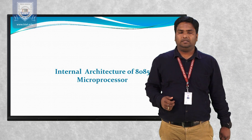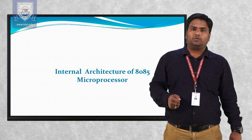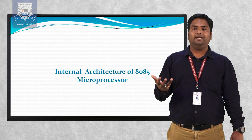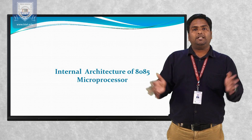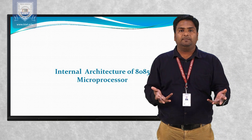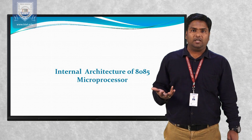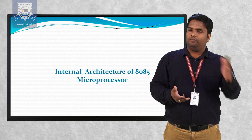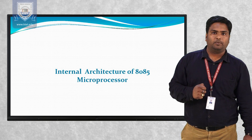Now we have the internal architecture of 8085. Internal architecture means that which is not visible to the human eye. If you're talking about outer architecture, it is visible to all. But internal architecture is not visible — it is basically the process through which we can perform the operations of the 8085 microprocessor. Internal architecture means how data will be processed from one location to another location.